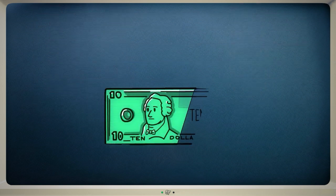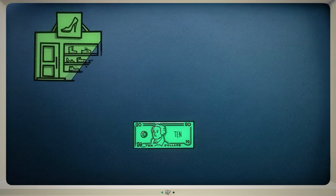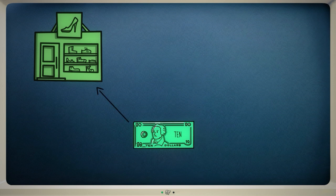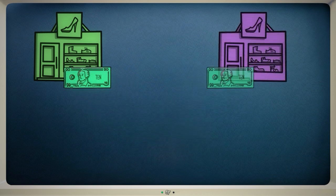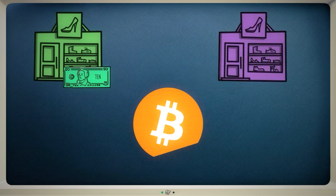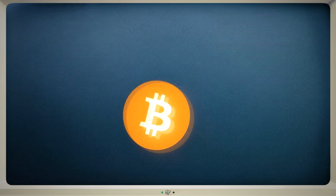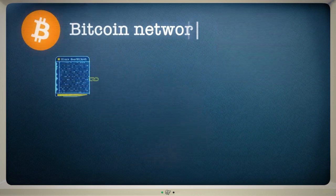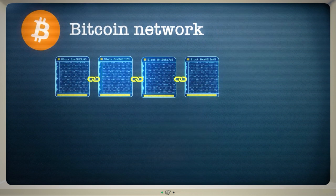When you hand over a $10 bill in a store, it's impossible to spend that same $10 bill somewhere else. Bitcoin also prevents double spending. That's because every transaction is verified and recorded on a blockchain, protecting the network against hacks.